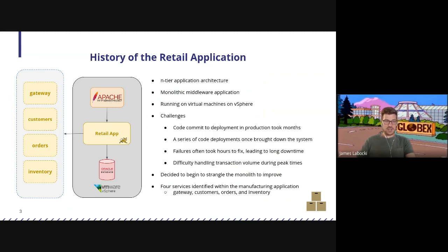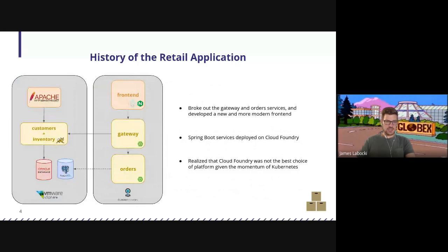We decided to begin to strangle this monolith. There are four services we identified: the gateway service, the customer service, the order service, and the inventory service. We began to strangle them out, and at the time we heard of this platform called Cloud Foundry. So we decided to strangle out the gateway and order service and develop a new modern front end on Cloud Foundry using Spring Boot. Unfortunately, we realized that Cloud Foundry is not the best choice of platform given the momentum that Kubernetes has in the ecosystem. We also started to discover new runtimes like Quarkus that were even more efficient than Spring Boot for cloud-native application development.